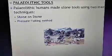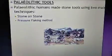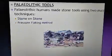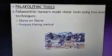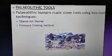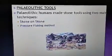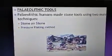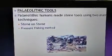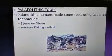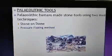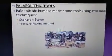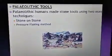In the stone on stone method, the core stone from which the tool was to be made was held in one hand and struck with another stone called the hammer stone. The hammer stone was used to remove flakes from the core stone until the desired shape and size was obtained. In this method, both stones were carried in the hands.